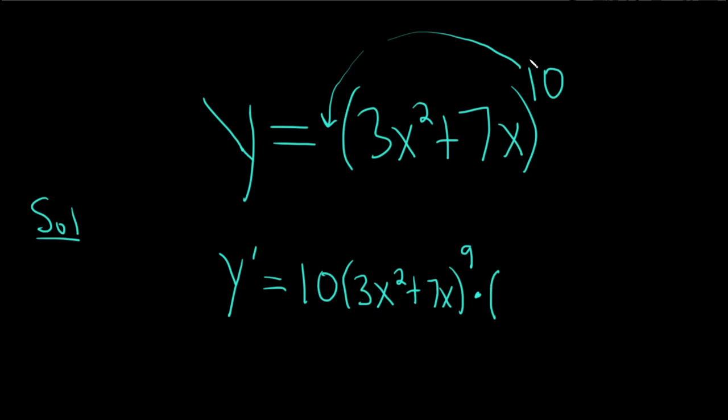So this is the chain rule, right? We take the derivative of that outside, then multiply by the derivative of the inside. So the derivative of the inside would be 2 times 3 is 6, so 6x, and then the derivative of 7x is 7.